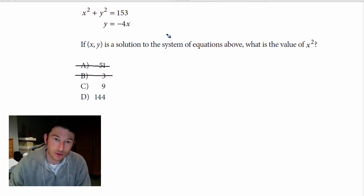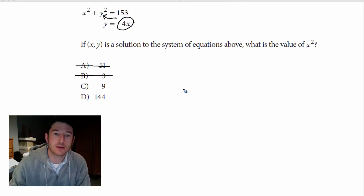So let's say this is just substitution. So I'm going to take negative 4x and plug it in here because that's y. So x squared plus negative 4x squared equals 153. We're going to bring this down.